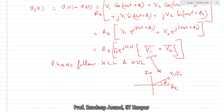To add two phasors, you can draw them on the real-imaginary plane and add them. A student asks about adding 2 pi to the angle — adding 2 pi doesn't change anything because you come back to the same point. Cos theta plus 2 pi equals cos theta. Phasors are stationary, not rotating, but we understand that the circuit is operating at frequency omega naught.